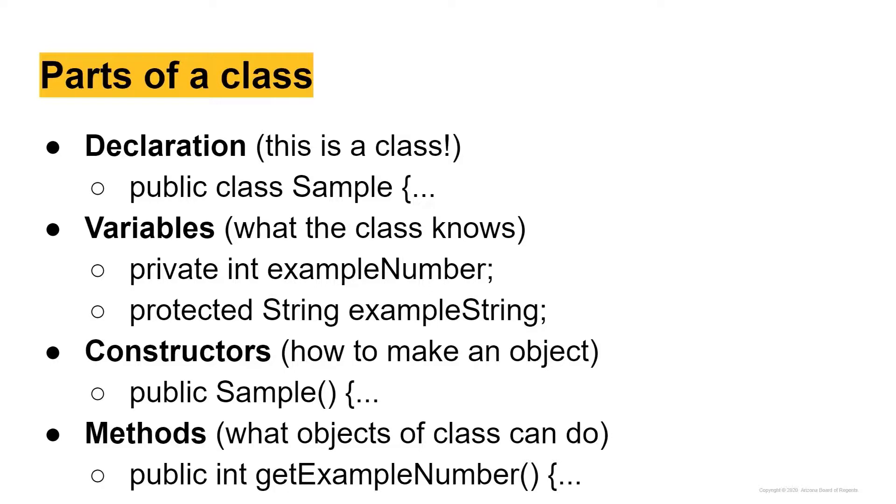So you're going to say public and then sample name, whatever the name of your class is, it should be the same name. So the name of this class is sample. So public sample. And then within it, we are going to basically tell the computer or the program how to make an object of this class. And we'll talk about that in just a second.